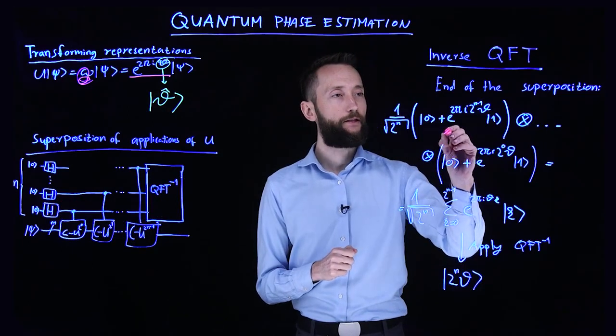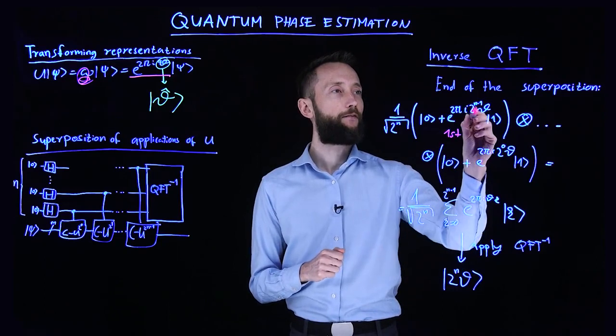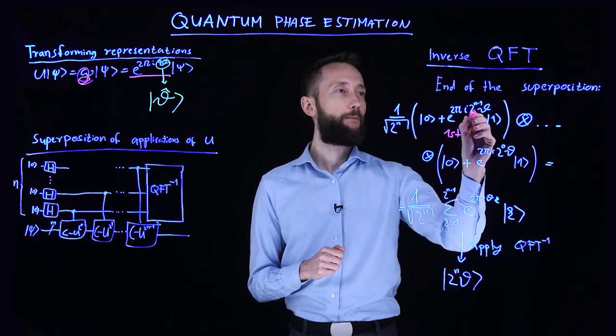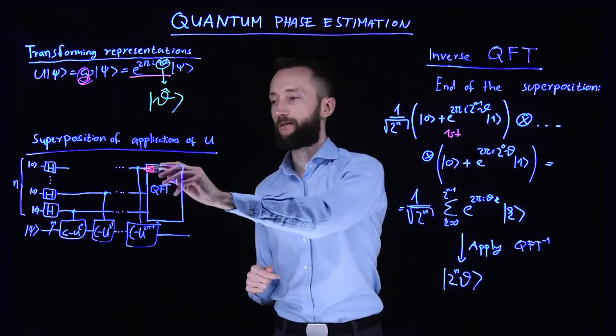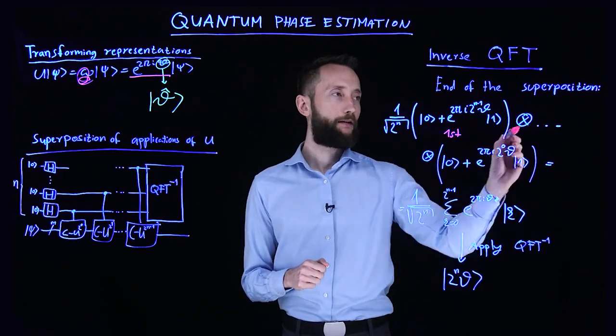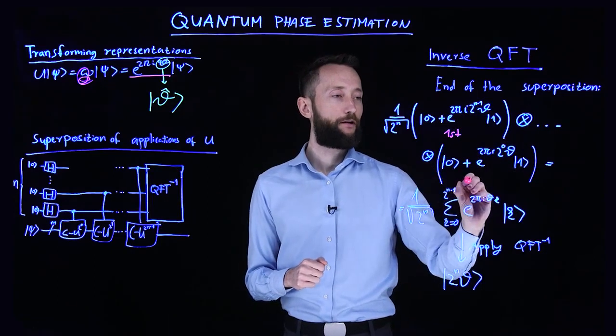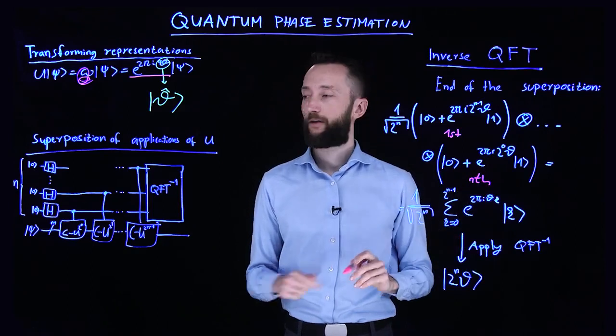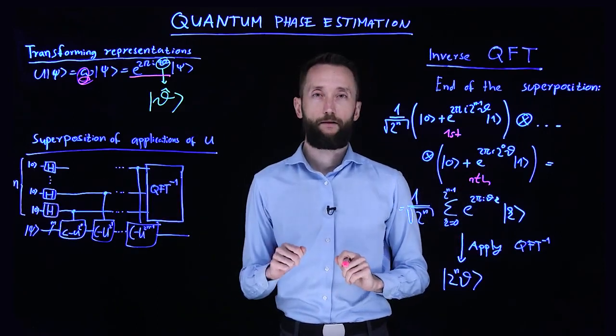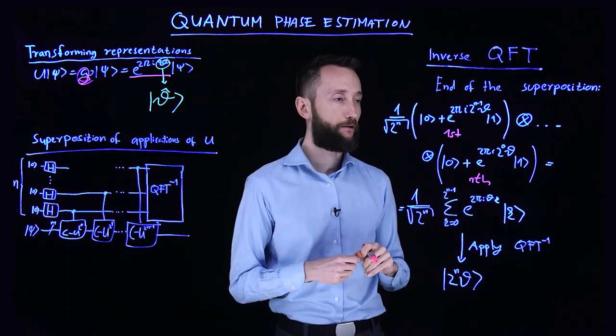The first qubit has the unitary applied 2^(n-1) times, continuing all the way to the very last nth qubit in your ancilla where you are estimating the eigenvalue.